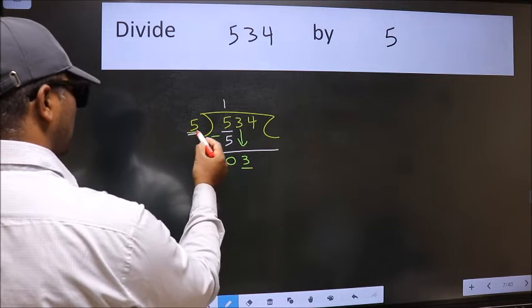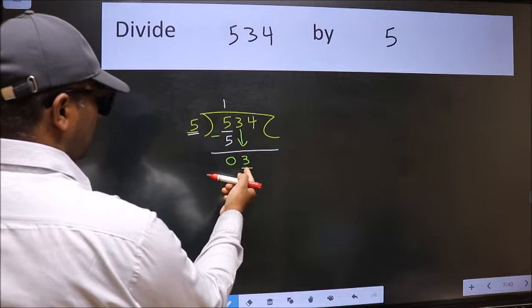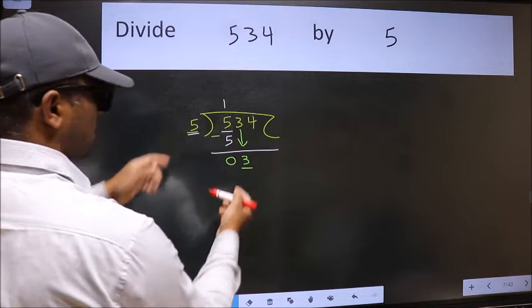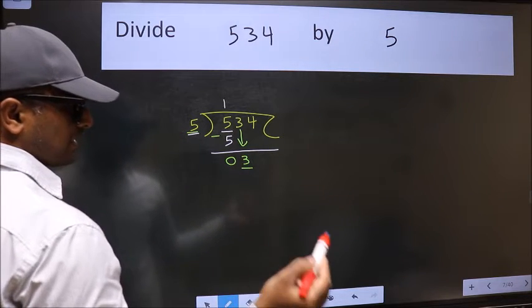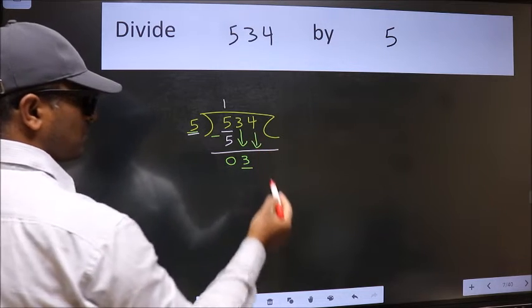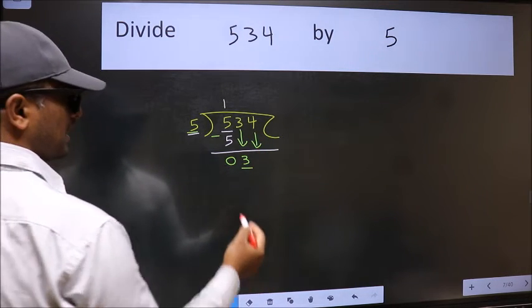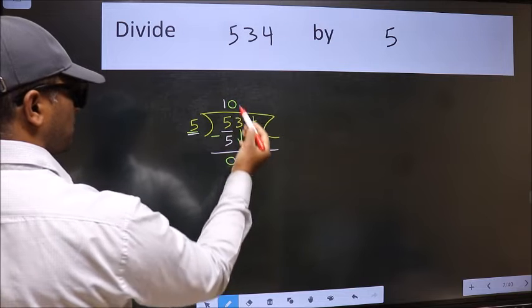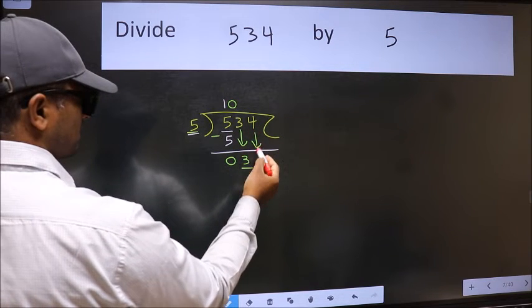Now here we have 3 and here 5. 3 is smaller than 5, so we should bring down the second number. And the rule to bring down the second number is we should put 0 here.